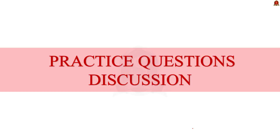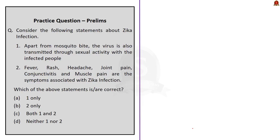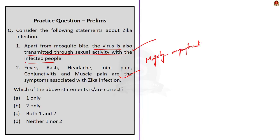Let's test the knowledge we gained from today's discussion with three practice preliminary questions. The first question is about Zika infection — we are asked to identify correct statements. Statement one: apart from mosquito bite, the virus is also transmitted through sexual activity with infected people — this is correct. Statement two: fever, rash, headache, joint pain, conjunctivitis, and muscle pain are symptoms associated with Zika virus — this is also correct. Although majority of Zika infections are symptomless, some people do manifest these symptoms. It also affects the fetus in a pregnant woman more adversely, which in turn may manifest as Guillain-Barré syndrome. So both statements are right, and the correct option is option C.